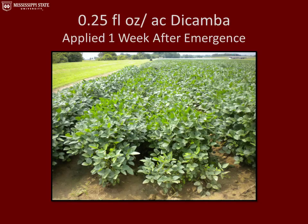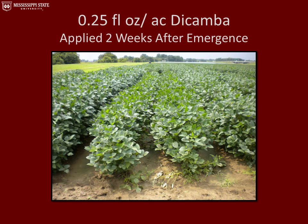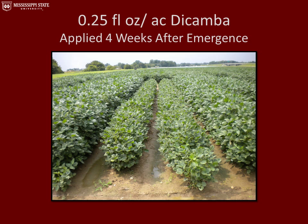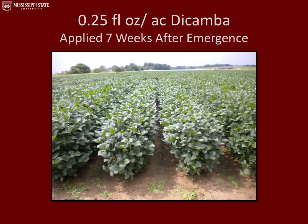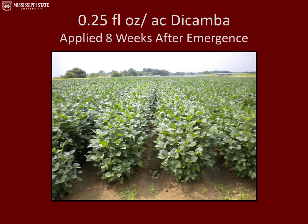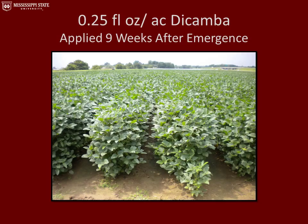Plots were set up the same as the previous experiment: four-row plots with only the two center rows treated. All treatments received the same application rate — 0.25 fluid ounces per acre of dicamba — with the only difference being when the application was applied: one week through nine weeks after plant emergence. After nine weeks, we saw no significant injury, height reductions, or yield reductions.